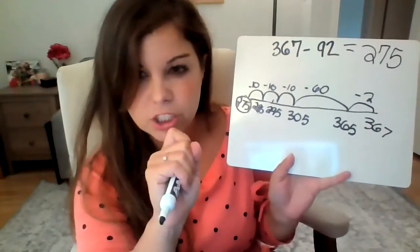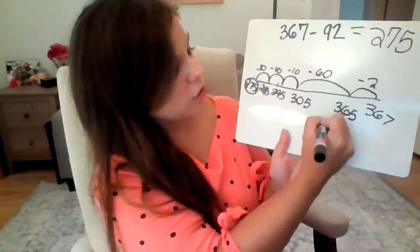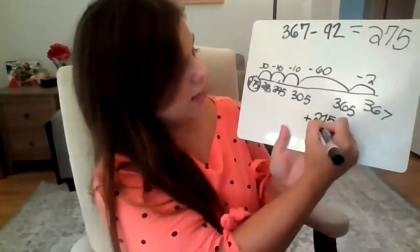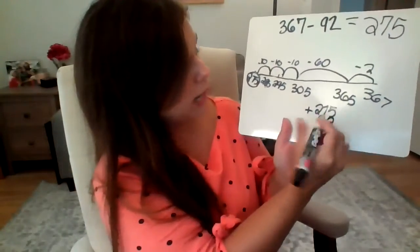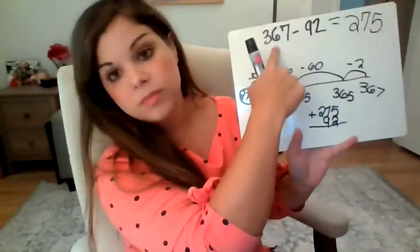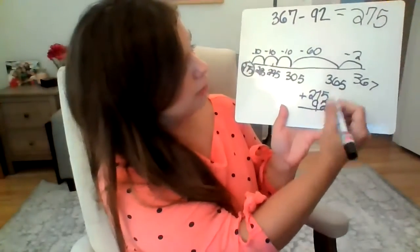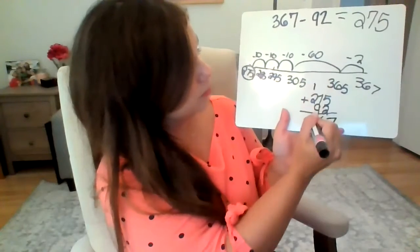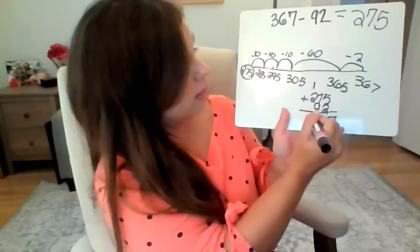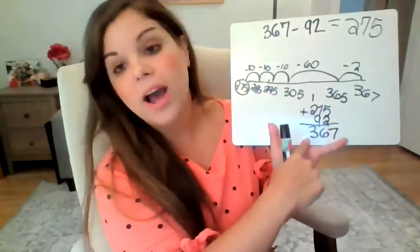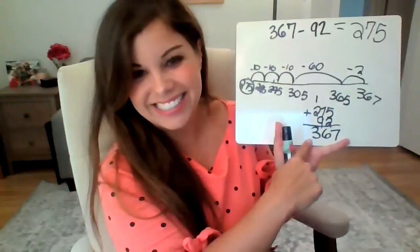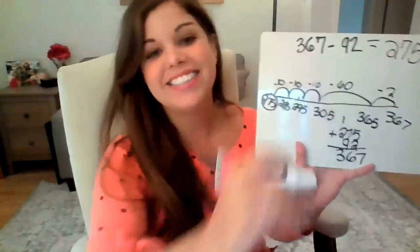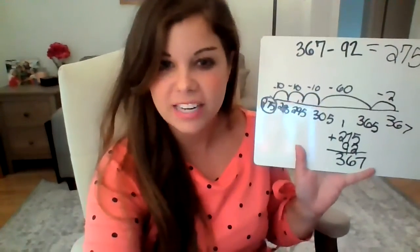Let's also double check it. So we want to make sure that 275 plus 92 gives us our whole. So 5 plus 2 is 7, 7 plus 9 is 16, 2 plus 1 is 3. So I end up with 367. So I'm feeling pretty confident about my answer.